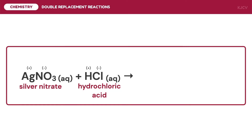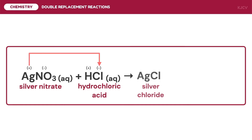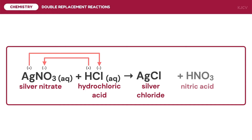Silver, having a positive charge, will be paired with the chloride ion, forming silver chloride. On the other hand, hydrogen of hydrochloric acid will be paired with the nitrate ion to form nitric acid. The next step is to identify which between silver chloride and nitric acid will be the precipitate. However, acids and bases usually exist in aqueous form as products of chemical reactions.